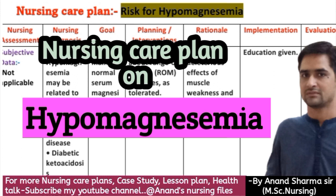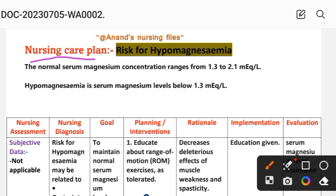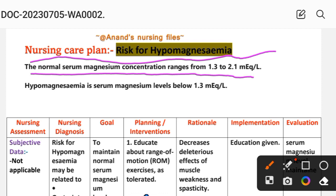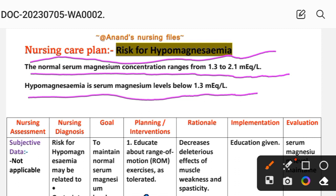Hypomagnesemia nursing care plan. The normal serum magnesium concentration ranges from 1.3 to 2.1 mEq per liter. Hypomagnesemia is a serum magnesium level below 1.3 mEq per liter. When the serum magnesium level falls below 1.3 mEq per liter, this condition is called hypomagnesemia. So let's see the nursing care plan.